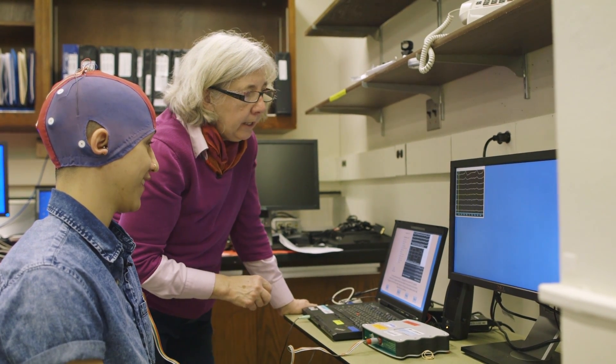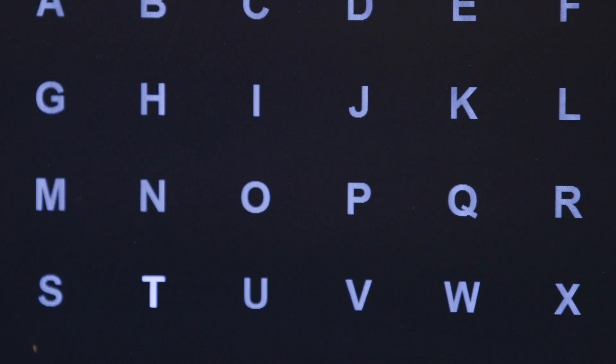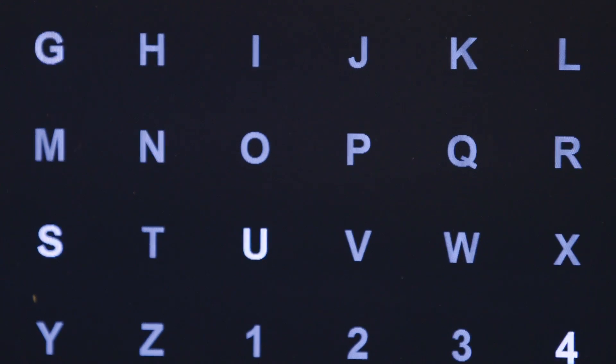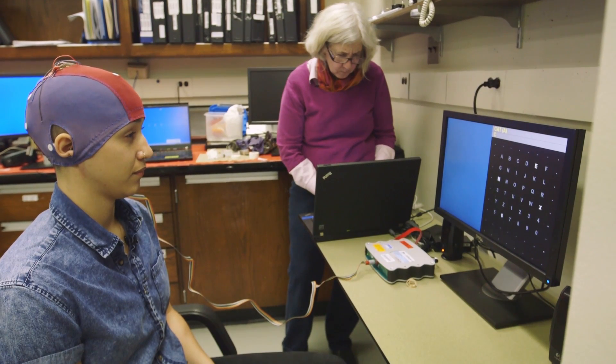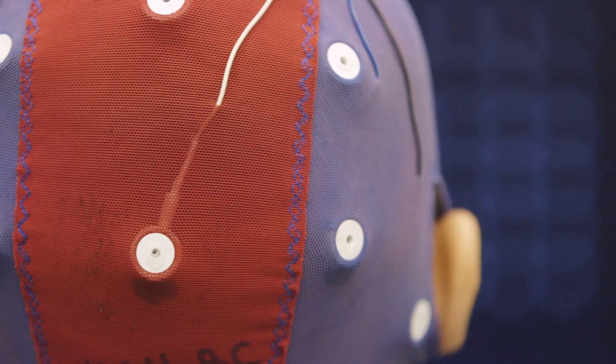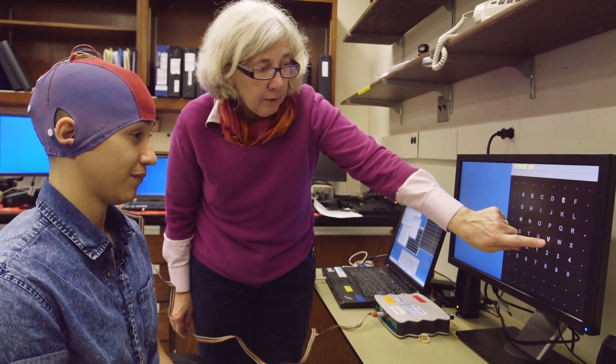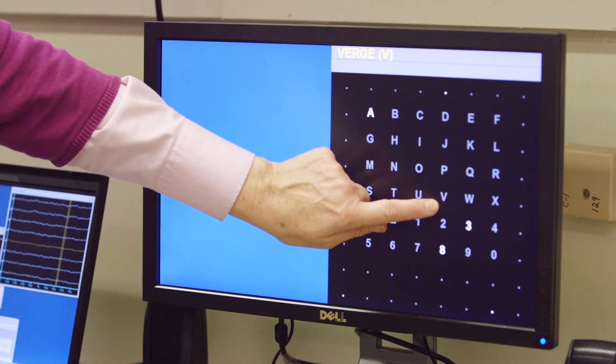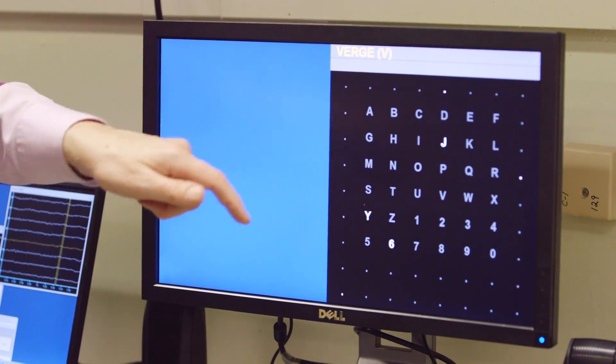You can see your eye blinks. There are a matrix of stimuli that are presented. They can be—you can have a matrix of letters and numbers or function calls, various kinds of things the person might want to select. And that's a flash, you see that? So every time it flashes, you just count.